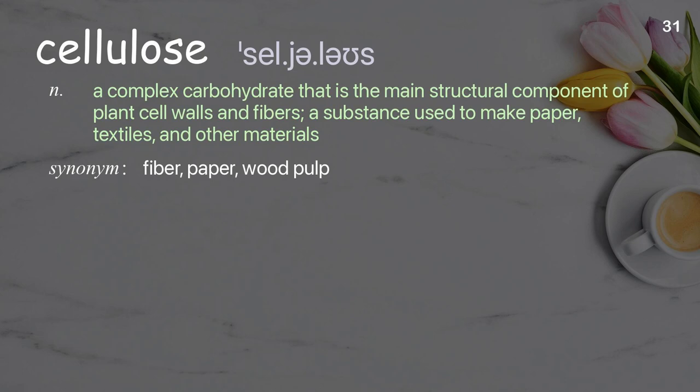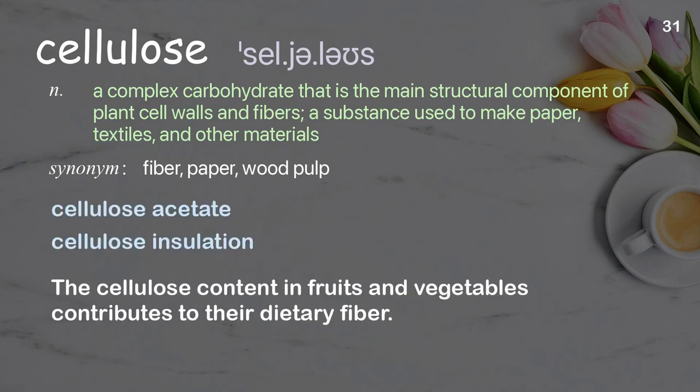Cellulose: A complex carbohydrate that is the main structural component of plant cell walls and fibers; a substance used to make paper, textiles, and other materials. Examples: Cellulose. The cellulose content in fruits and vegetables contributes to their dietary fiber.